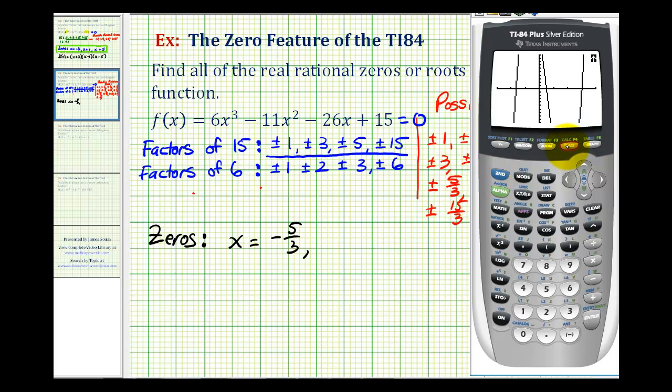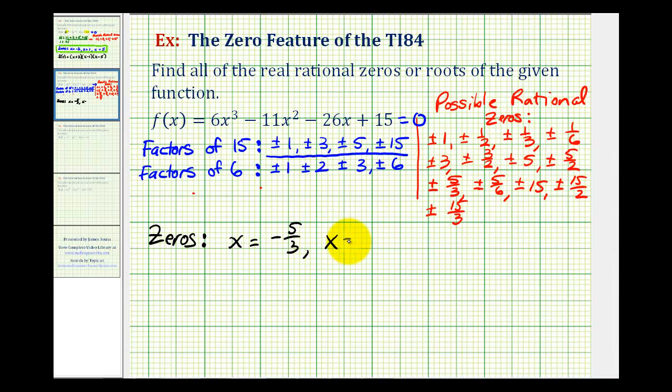So again, we're going to press second, trace, option two. Let's try to find this x-intercept here. So the left of this x-intercept, in this case, would be above, because it's decreasing. So I am to the left, so I'll press enter. To the right, we'll press the right arrow, so that we're below the x-intercept. Press enter. And then for guess, we press enter again. Notice this zero was a lot easier to determine. X equals 0.5, or x equals 1/2. Let's go ahead and write that down.